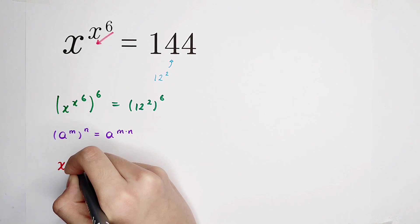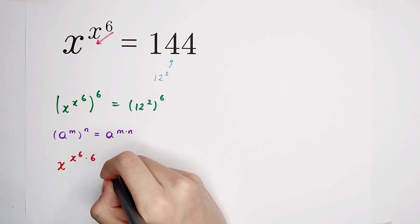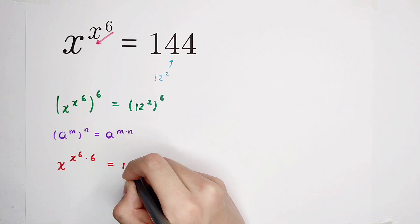So it is x to the power of 6 times 6, equals 12 to the power of 2 times 6, which is 12 to the power of 12.